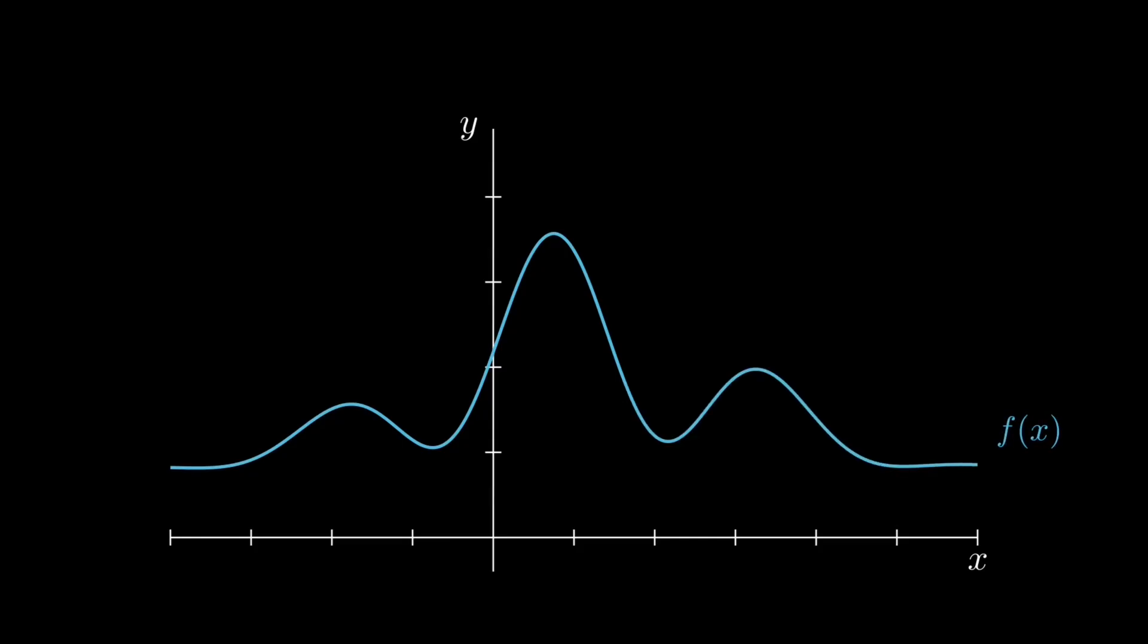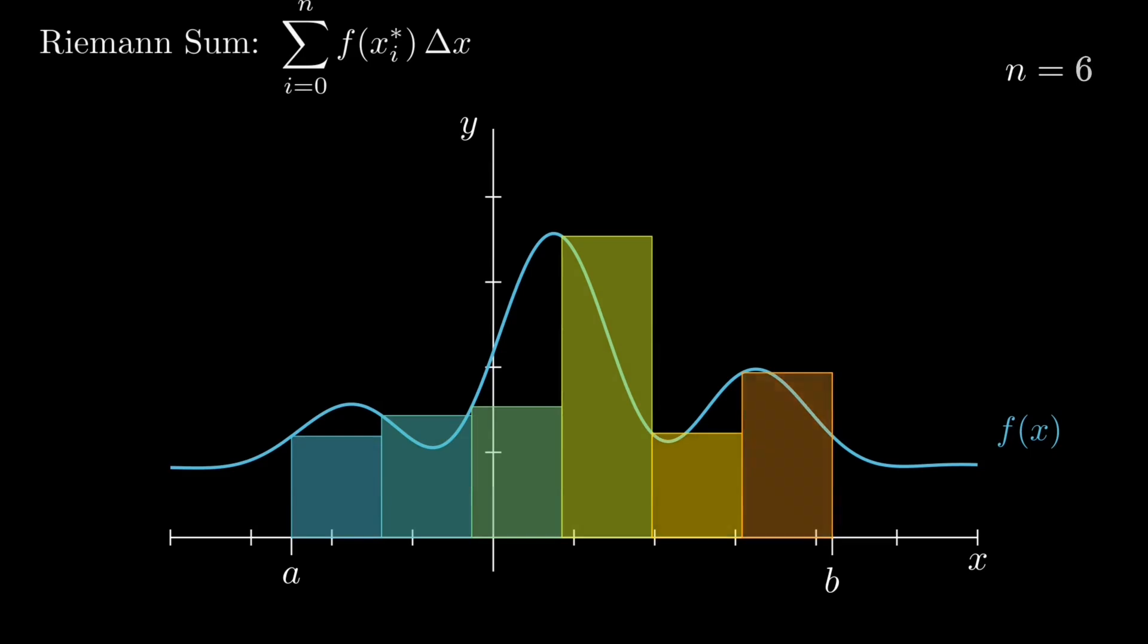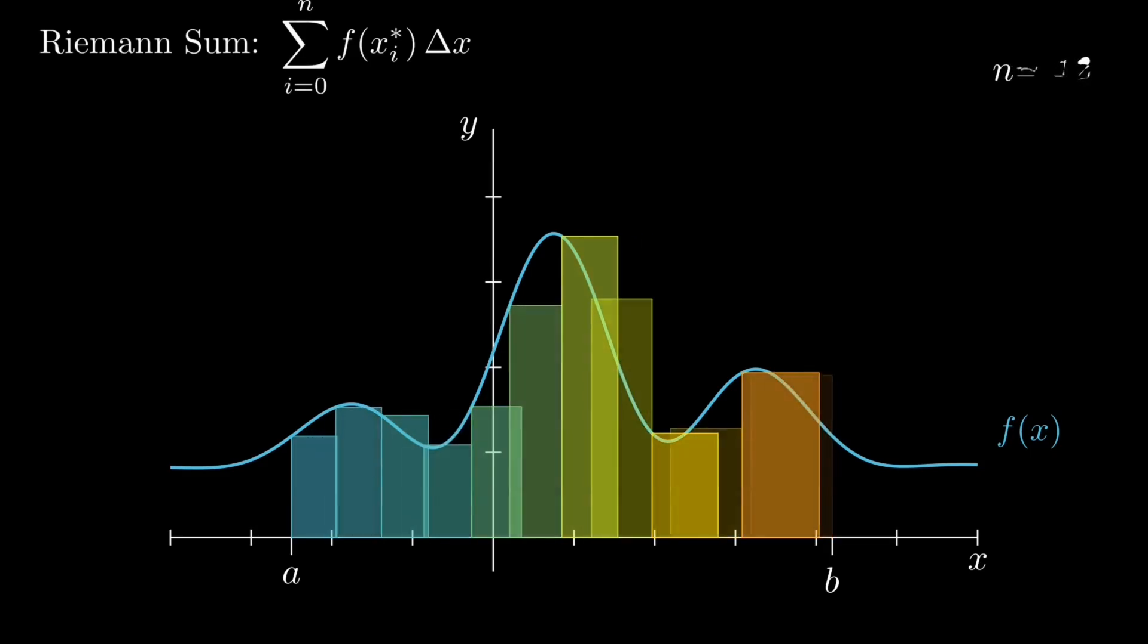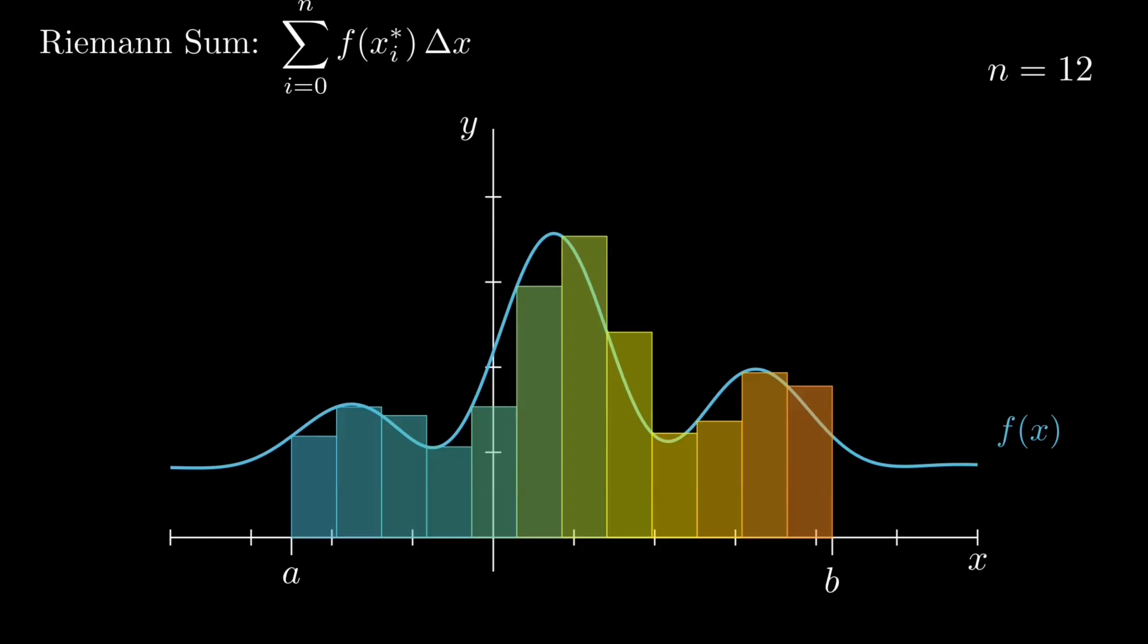Suppose we have a function f defined between x equals a and x equals b. We divide this region into n subintervals of equal width delta x. In each subinterval, we sample the function at a chosen point